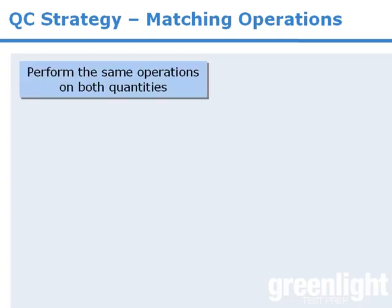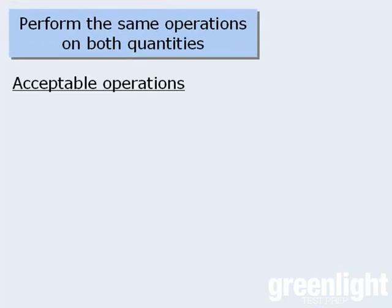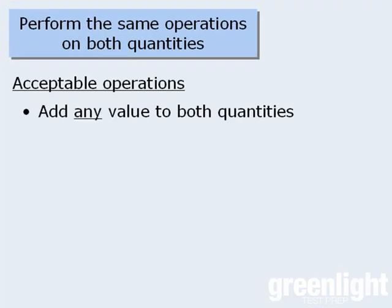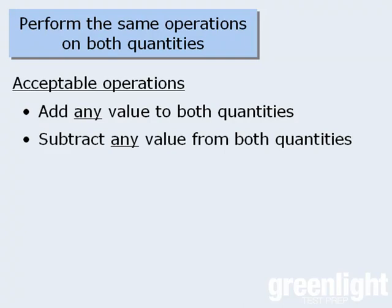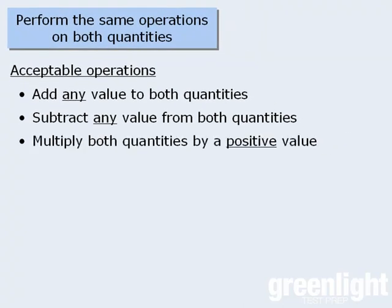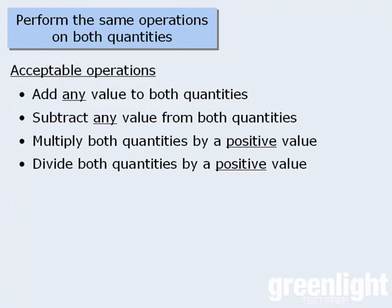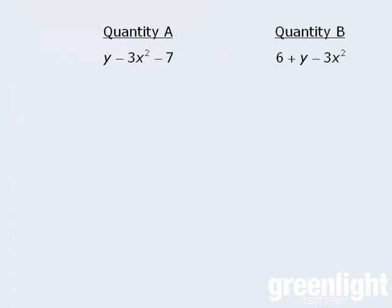In this lesson, we'll examine a very useful strategy to consider when answering quantitative comparison questions. The technique is to perform the same operations on both quantities. In particular, you can add any value to both quantities, subtract any value from both quantities, multiply both quantities by a positive value, and divide both quantities by a positive value. This is a very common technique that can be applied to a wide range of questions. Let's look at some examples.